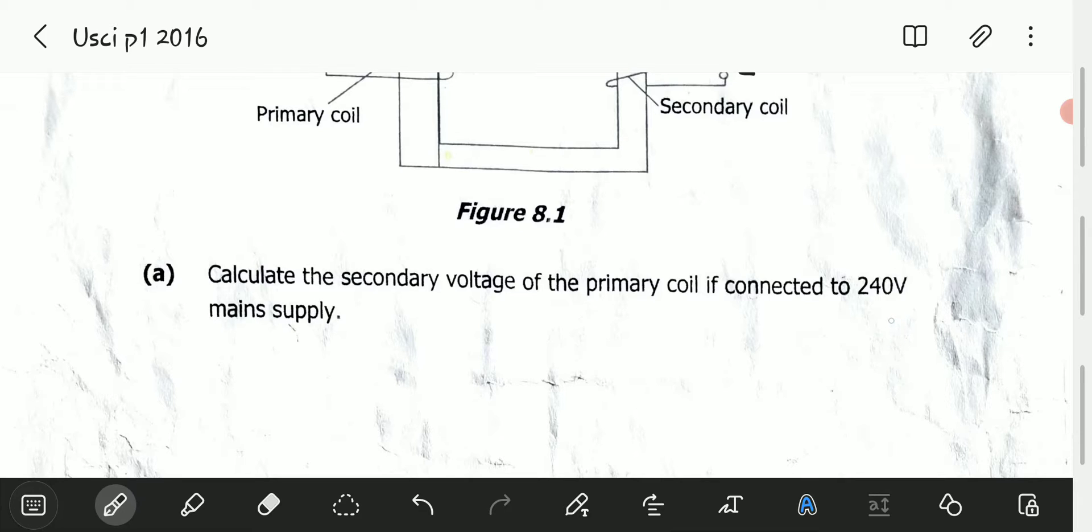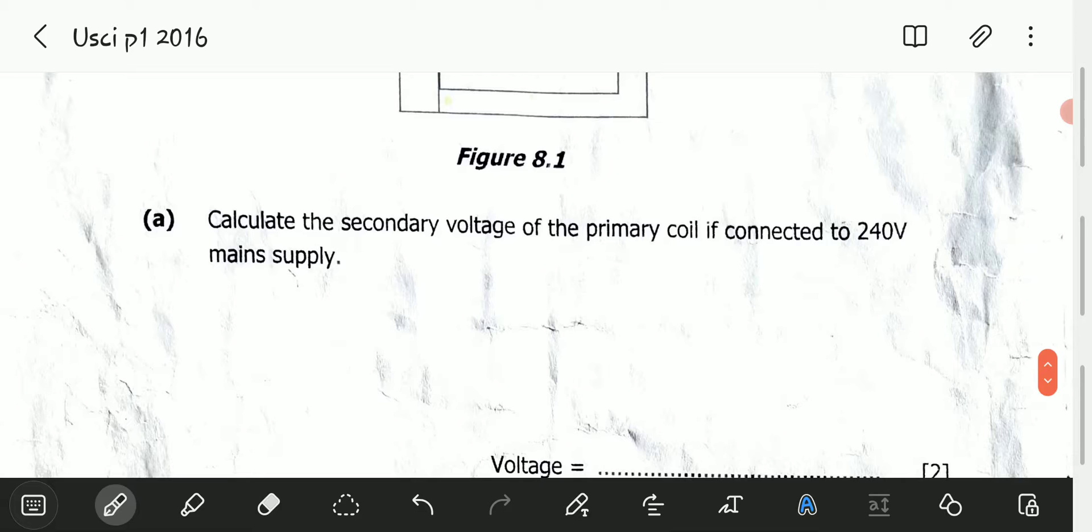This is one of the simplest questions under transformers using the transformer equation. The transformer equation says that the number of turns in the primary divided by the voltage in the primary equals the number of turns in the secondary divided by the voltage in the secondary. The ratio of the number of turns to the voltage is constant.